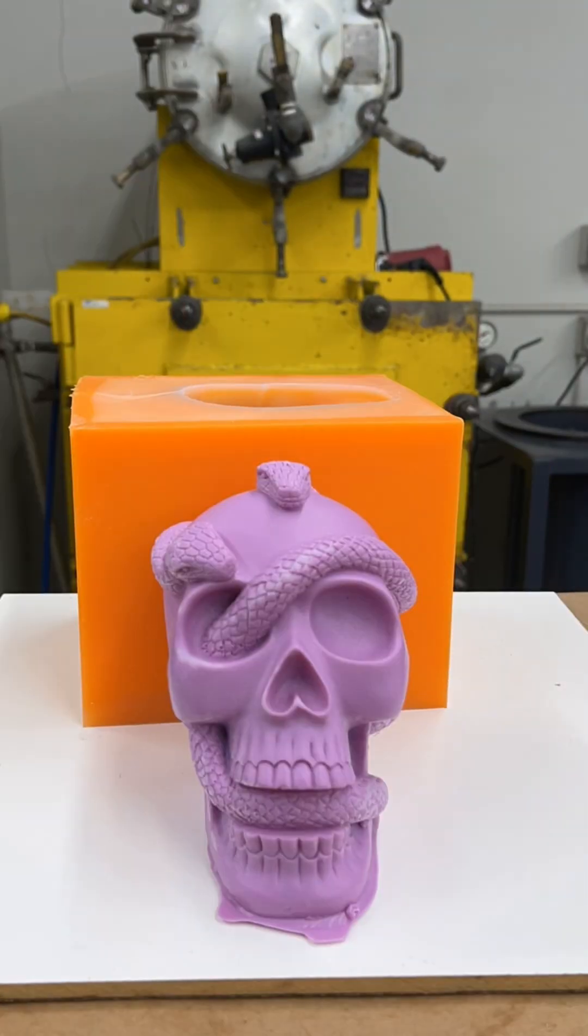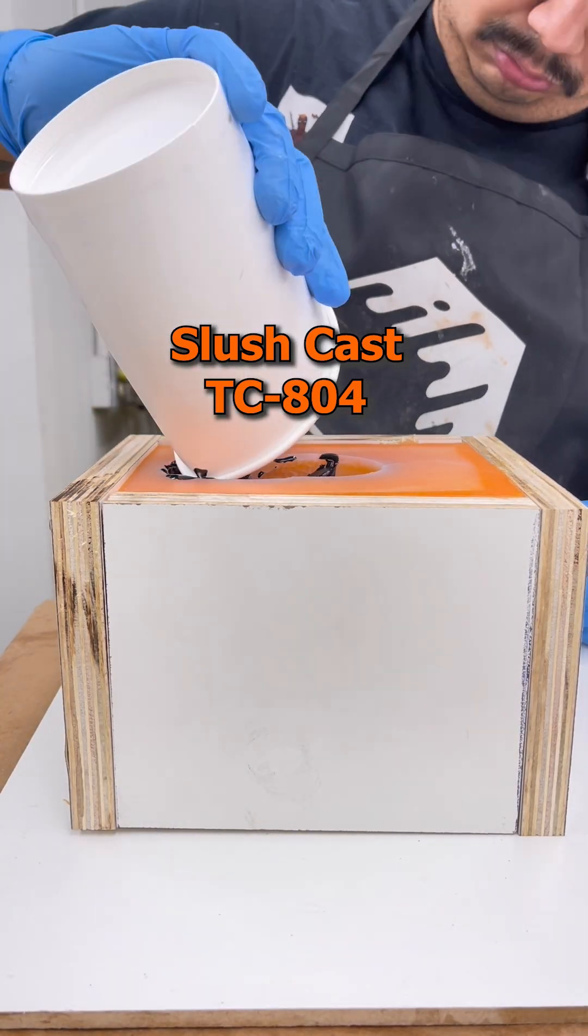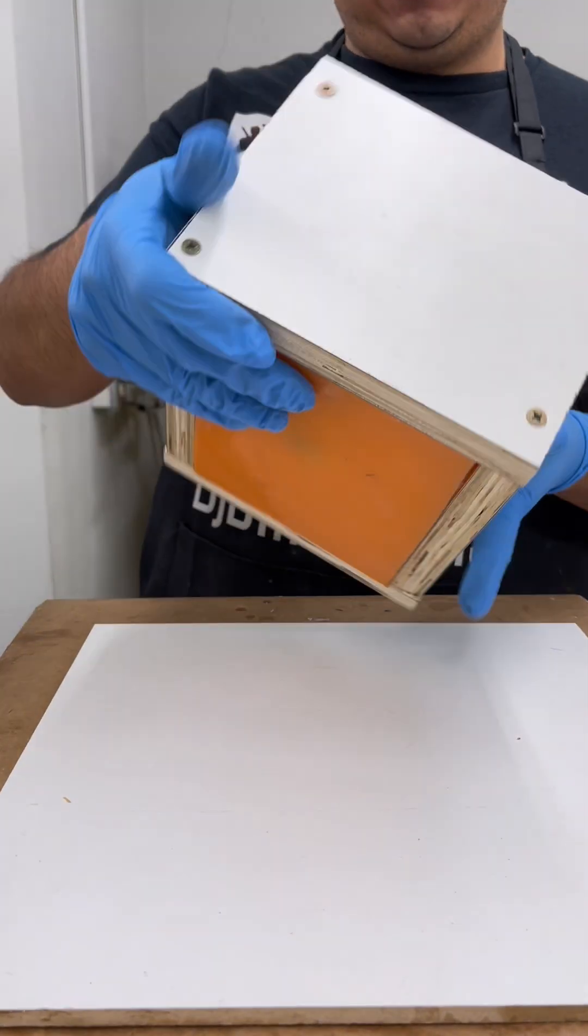I later created a slush cast by pouring several small batches of dyed 804, and rotating the mold by hand for an even coat.